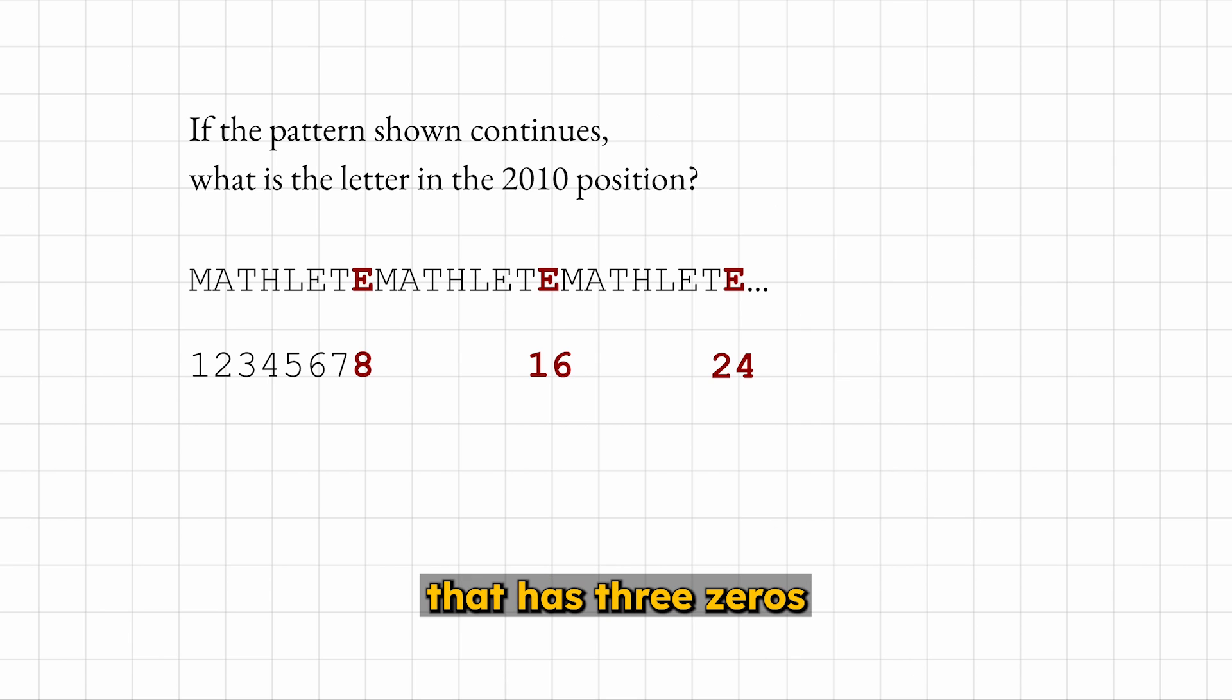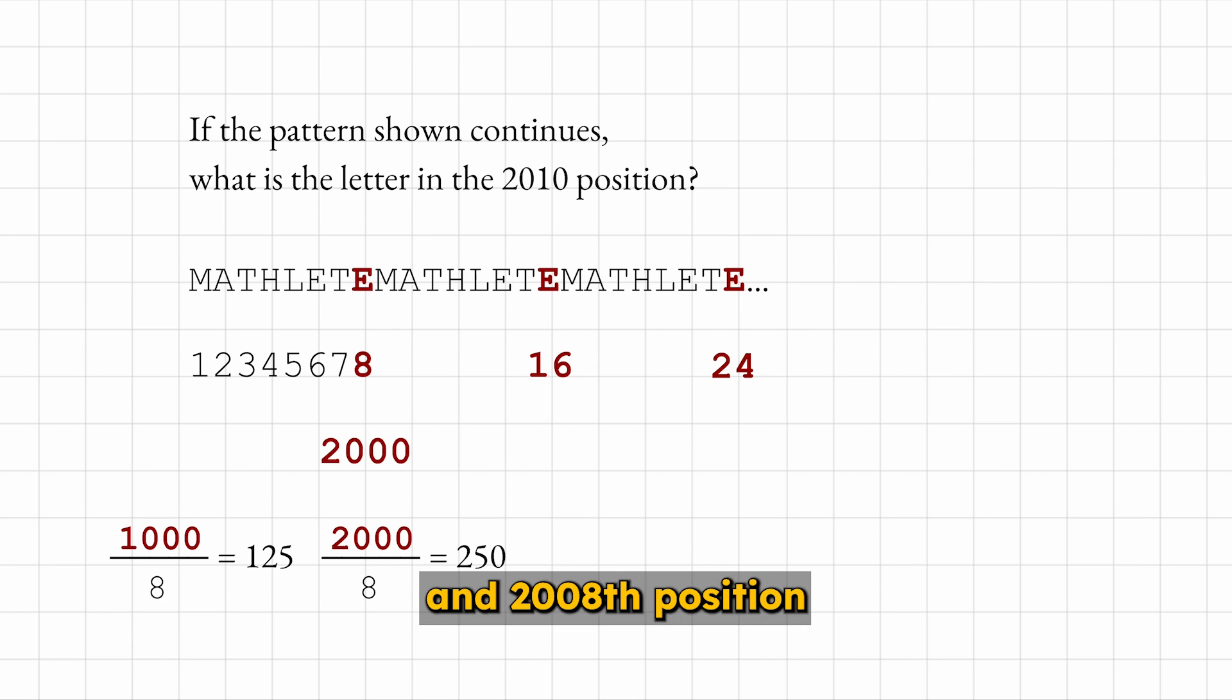Second, any number that has 3 zeros in it is a multiple of 8, which means that the 2000th and 2008th position is also the letter E. Since 2010 is 2 away from 2008, the answer is A.